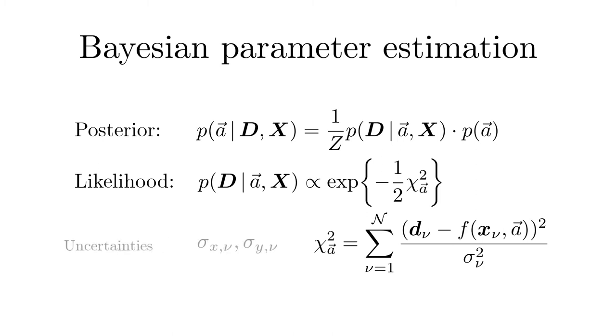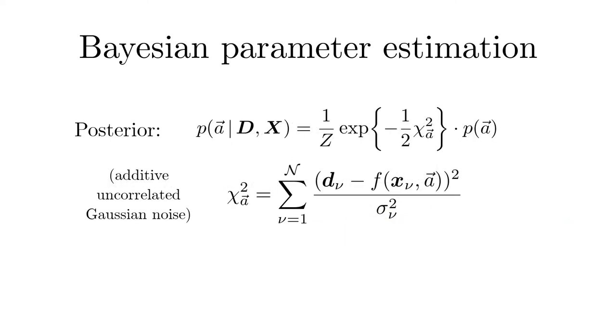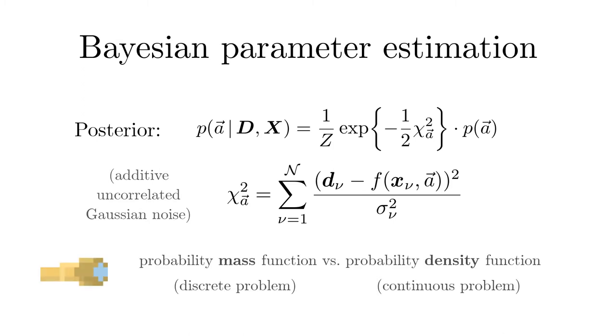This misfit term chi-squared corresponds to the cost function which we saw in the classical regression procedure. If there are uncertainties in both coordinates and if the regression function is linear in x, then the misfit is given by the following expression. In summary, we find the following probability density function for the parameters.